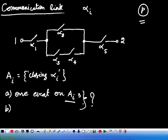Otherwise, alpha 1, alpha 3, alpha 4, alpha 5. So therefore we have two different events. What is the first event? A1 intersection A2 intersection A5, or A1 intersection A3 intersection A4 intersection A5.